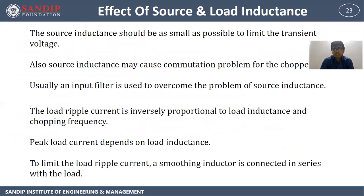Next is the effect of source and load inductance. The source inductance should be as small as possible to limit the transient voltage. Source inductance may also cause commutation problems for the chopper. Usually an input filter is used to overcome the problem of source inductance. The load ripple current is inversely proportional to the load inductance and chopping frequency. Peak load current depends on the load inductance. To limit the load ripple current, a smoothing inductor is connected in series with the load.